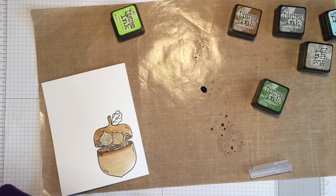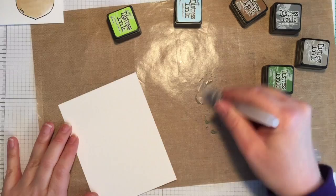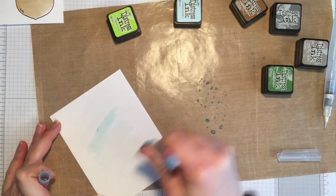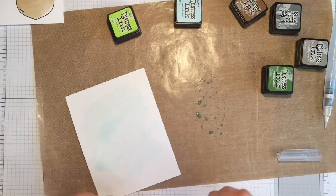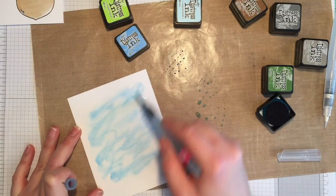So while that dries I'm going to go over to my background and I'm going to use tumbled glass distress ink for my background. I switched to a larger brush because I needed more surface area covered. So I'm using the tumbled glass first and then that wasn't dark enough so I went to broken china which is a little bit of a deeper blue. And I'm just sort of scribbling the color on and adding water so that they blend nicely together. And once I'm happy with how that looks I'm just going to set that aside to dry as well.